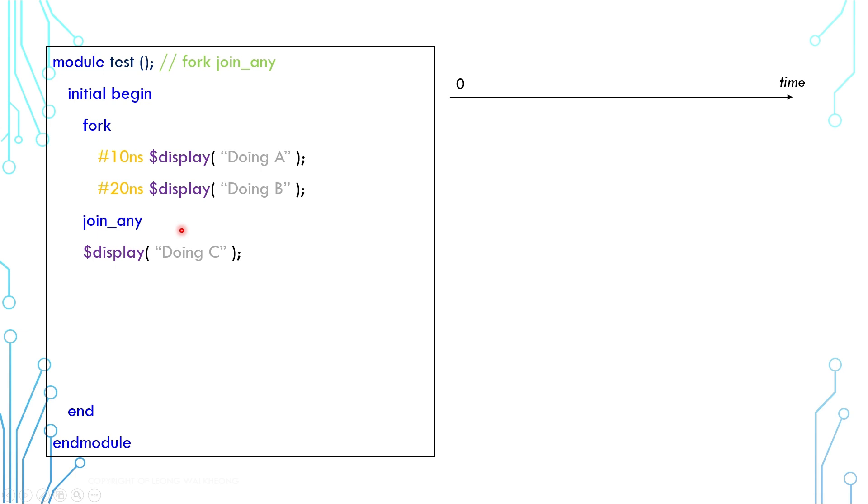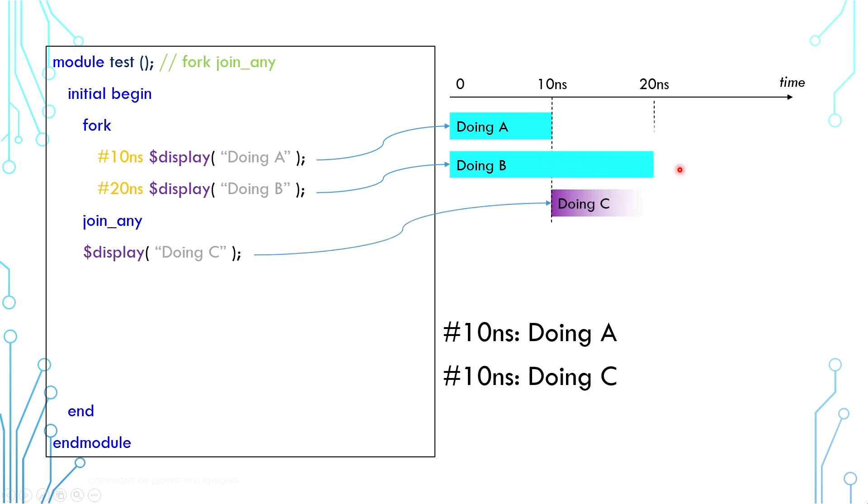Apart from fork join, there are two other similar constructs. This is a fork join_any construct. It is the same as before except that it uses join_any. Join waits for all threads to finish. Join_any waits for any one of them to finish. In this case, A and B start at time 0. A finishes at 10 nanoseconds, B has not finished then and continues. But because of join_any construct, C will kickstart at 10 nanoseconds after A.